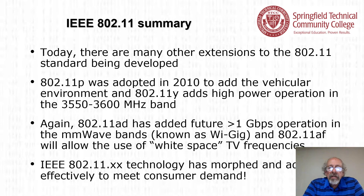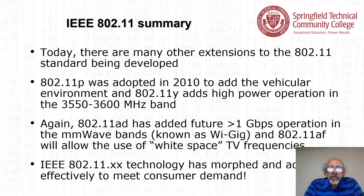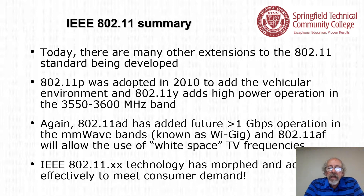Today there are many other extensions to the 802.11 standard being developed. 802.11p was adopted in 2010 to add the vehicular environment, and 802.11y adds high power operation in the 3550 to 3600 megahertz band. 802.11ad has added greater than one gigabit per second operation in the millimeter wave bands, known as WiGig, and 802.11af will allow the use of white space TV frequencies — that is, TV frequencies where there's no channel assigned locally. IEEE 802.11 technology has morphed and adapted effectively to meet customer demand.